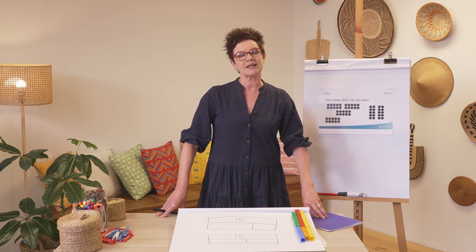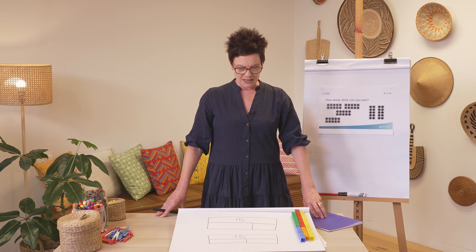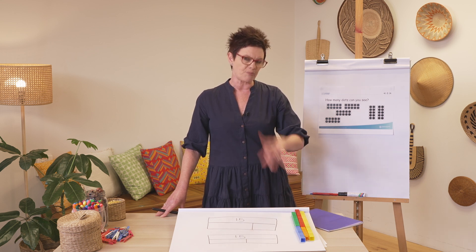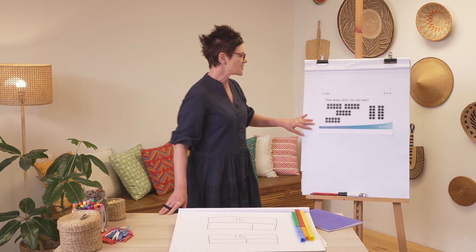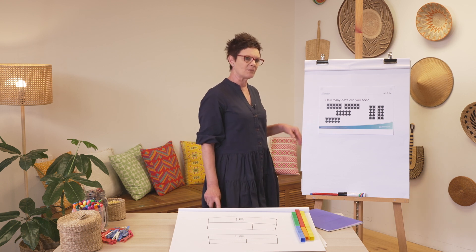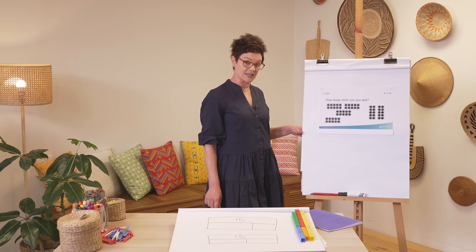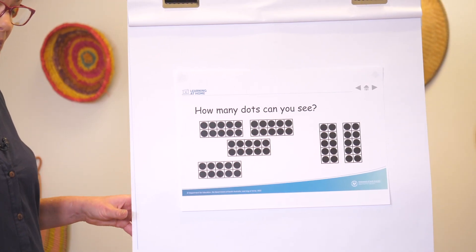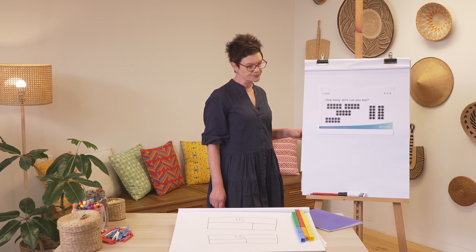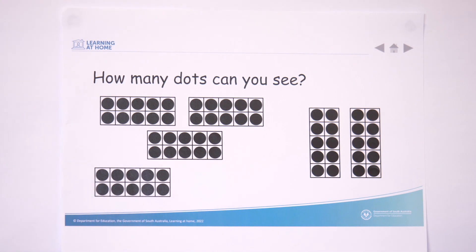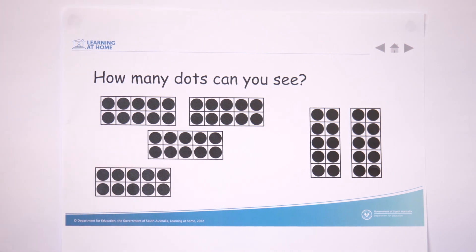Today's lesson is about our bar models, but before we get there let's do our warm-up. How many dots can you see? It's a bit trickier than last time. How many parts? What is it as a whole? Can you write a number sentence that shows us what we can see here?